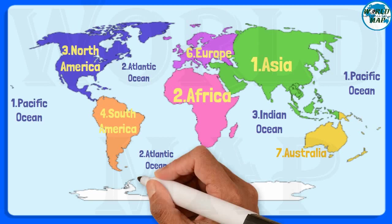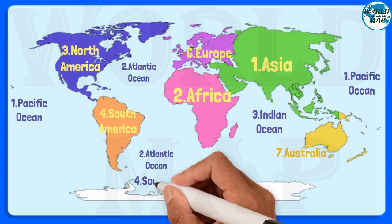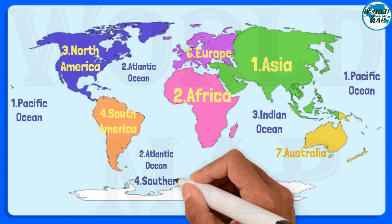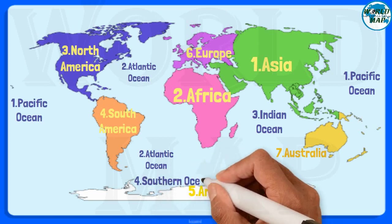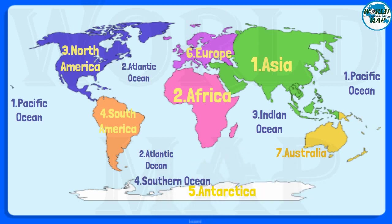Number 4. Southern Ocean. In 2000, the Southern Ocean became the newest ocean recognized by the International Hydrographic Organization. It borders Antarctica in its entirety.